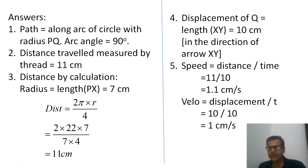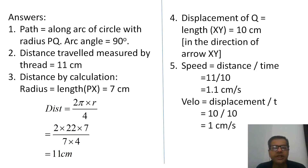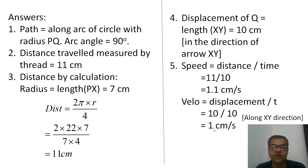The last question was calculation of speed and velocity assuming time is 10 seconds. Speed equals distance divided by time: 11 divided by 10 equals 1.1 centimeters per second. Velocity equals displacement divided by time: 10 divided by 10 equals 1 centimeter per second. Do not forget to write the units. Velocity is a vector quantity, so you must add the direction. The direction of velocity is the same as that of displacement — along XY direction. Final answer: velocity equals 1 centimeter per second along XY direction.